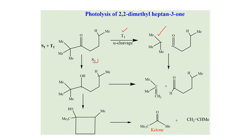And in the singlet state, similarly this hydrogen is shifted to the oxygen, then 1,4-biradicals are formed. This biradical is cyclized to cyclobutane, or it is converted similarly to the previous example — into enol which is tautomerized to keto or aldehyde. So one product is the keto form and the other is alkene.